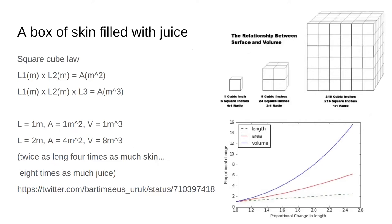The other thing to think about is the square cube law, but we were talking about that earlier with heat. If you imagine an animal as a box of skin filled with juice, this is a very simple animal, imagine that this animal is one meter long. That means it has a surface area of one meter squared and a volume of one meter cubed. If it gets twice as long, its surface area becomes four times larger and its volume becomes eight times larger. And here on this graph, you can see how as length increases area increases, but volume goes way up.